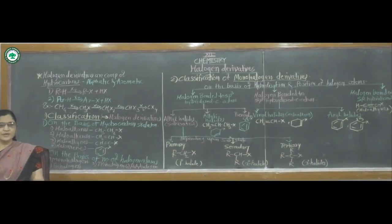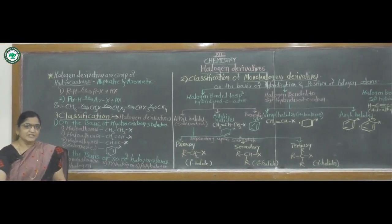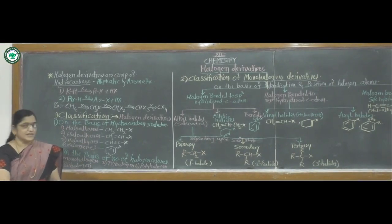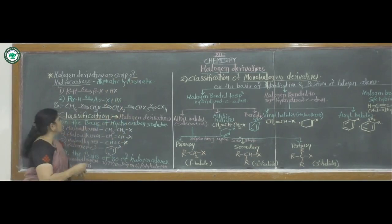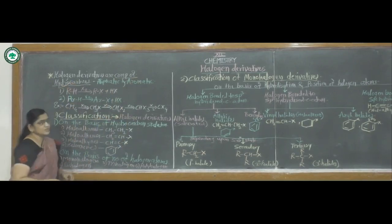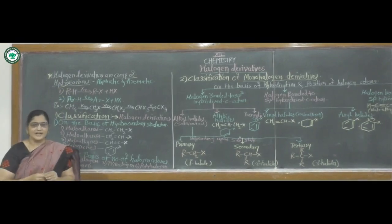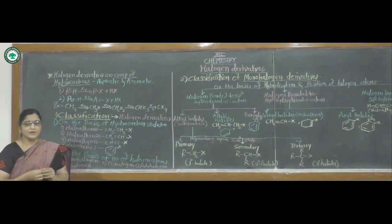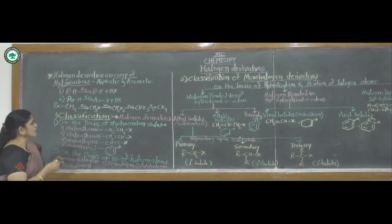Hello students. Today we are going to learn the first chapter of organic chemistry which is included in our syllabus. The name of this chapter is halogen derivatives. Halogen derivatives means these are compounds of hydrocarbons which are derived by halogen atoms. Compounds of hydrocarbon which are derived by halogen atoms are called as halogen derivatives.